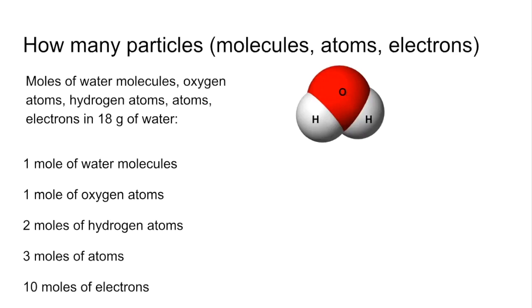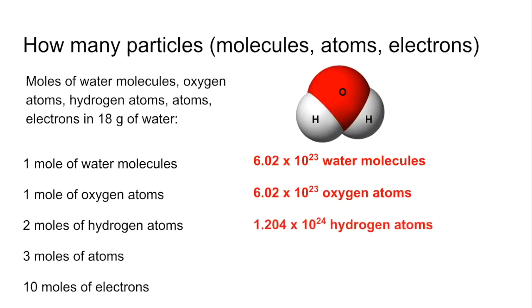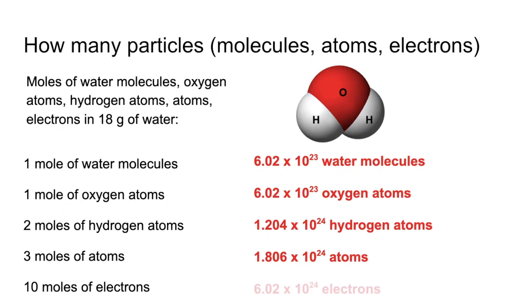So once you know the moles of things, you can turn that into a number, how many particles you've got by simply multiplying by Avogadro's number. So a mole of water molecules is obviously Avogadro's number of water molecules. Avogadro's number of oxygen atoms. Two times Avogadro's number of hydrogen atoms. Three times Avogadro's number of total atoms. And ten times Avogadro's number of electrons.